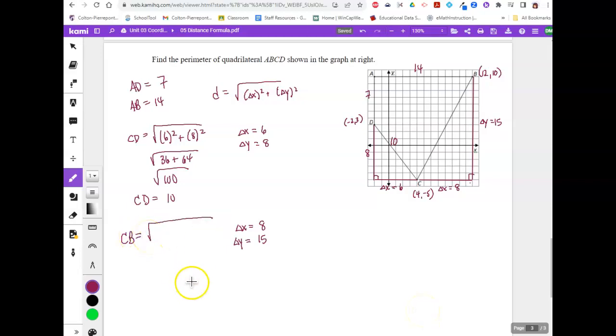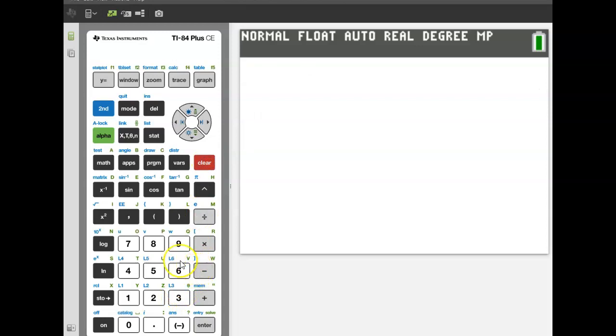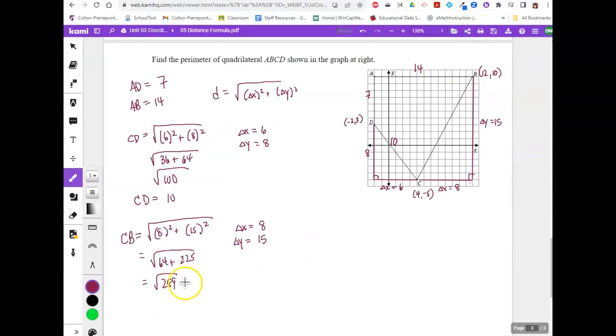So we need to do delta X squared plus delta Y squared. Delta X is 8 squared. Delta Y squared is 15 squared. So this will be 64 plus 225, which is 289. And I know what the square root of 289 is, but just to show you, if you have 8 squared plus 15 squared, there's the 289, and then take the square root, second X squared, of 289, and we get 17. So that means that CB is going to equal 17. So this length right here is 17.